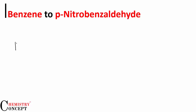We have benzene and we have to convert it into para-nitrobenzaldehyde. No problem, we'll do this — it's a simpler one.